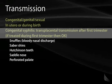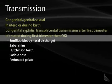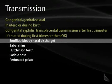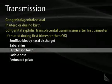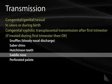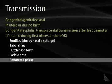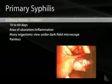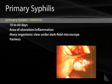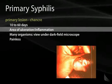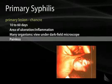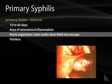If treated during the first trimester, you're okay. A child with congenital syphilis often has a bloody nasal discharge called snuffles, abnormal leg bones and saber shins, Hutchinson's teeth, a saddle nose deformity, and a perforated palate. Primary syphilis presents with a chancre — a painless ulcer lasting 10 to 60 days. Culture from that ulcer under dark field microscopy shows many organisms.